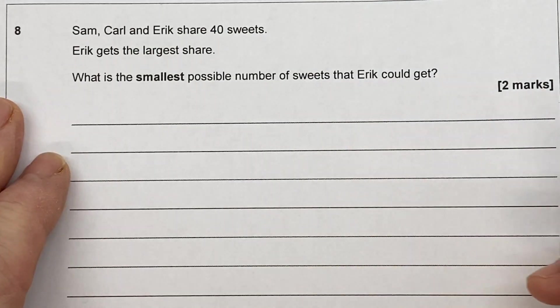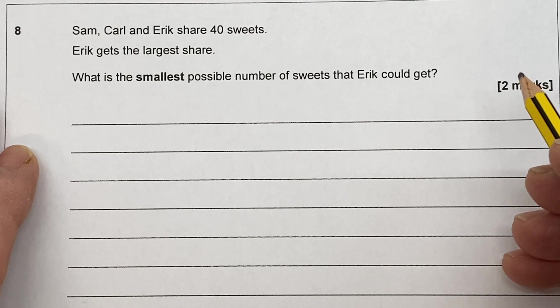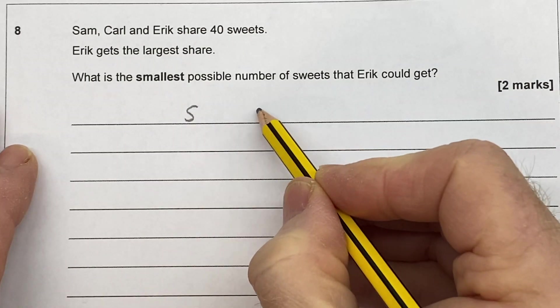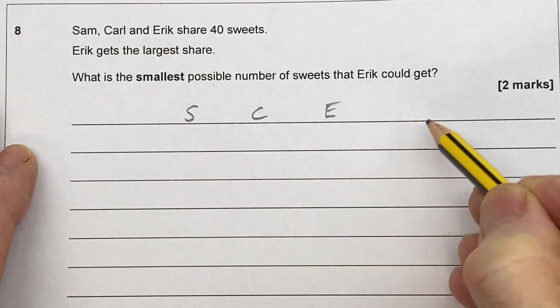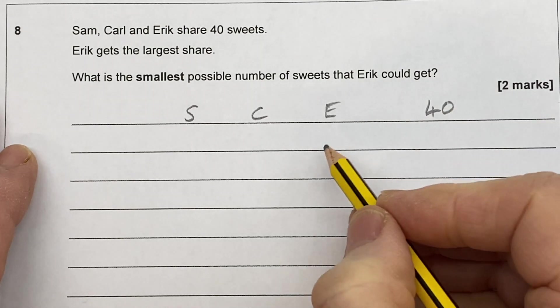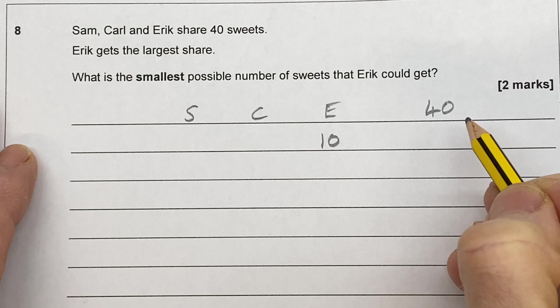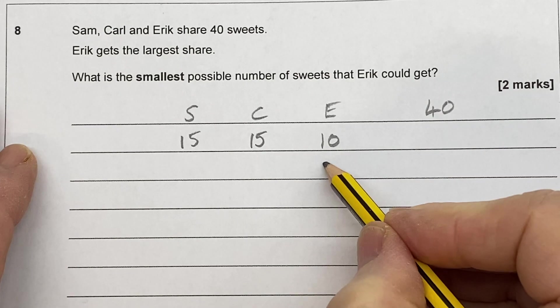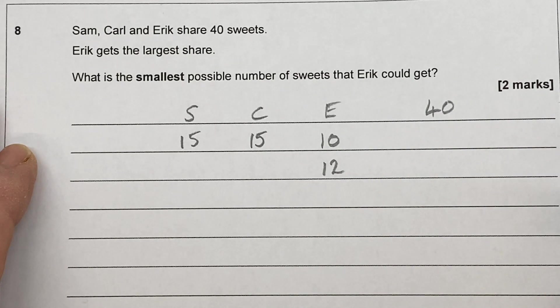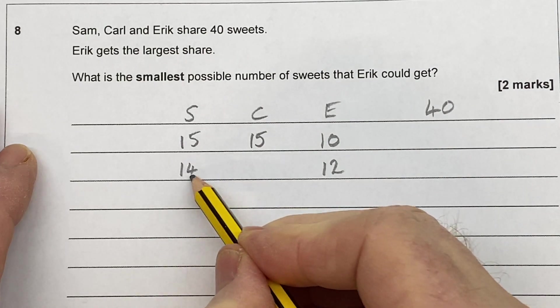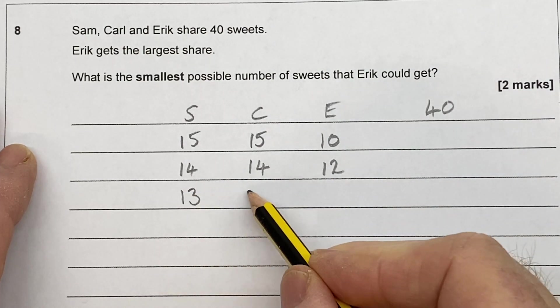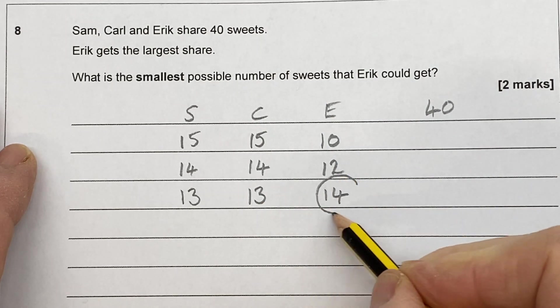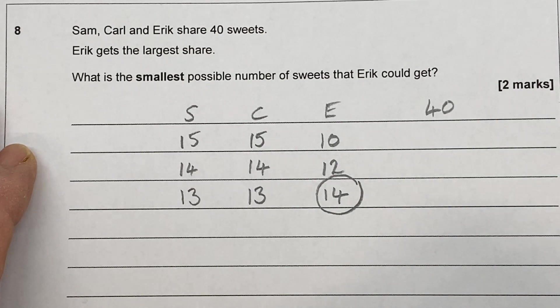Question 8. Sam, Carl and Eric share 40 sweets. But Eric gets the largest share. What's the smallest possible number of sweets that Eric could get? So I'm going to write down Sam, Carl and Eric. And we know they can have 40 altogether. Well, let's give Eric 10. So 40 take away 10 is 30. Oh no, they'd get 15 each. So we're going to give Eric some more. Let's try 12. If Eric gets 12, 40 take away 12 is 28. No, they'd get 14 each. Let's give them 13 each. That's 26. Eric could have 14. That is the smallest number of sweets that Eric can have. The answer is 14.